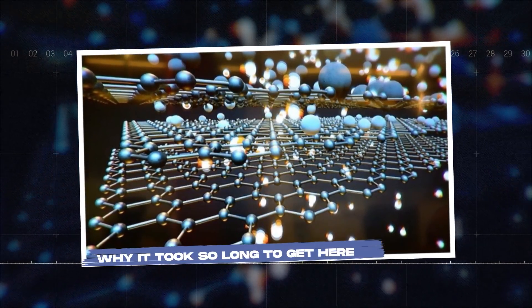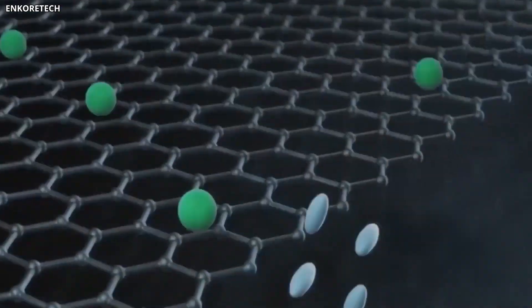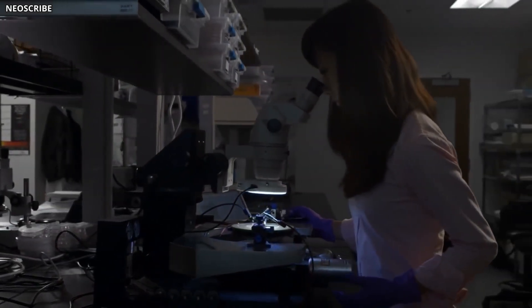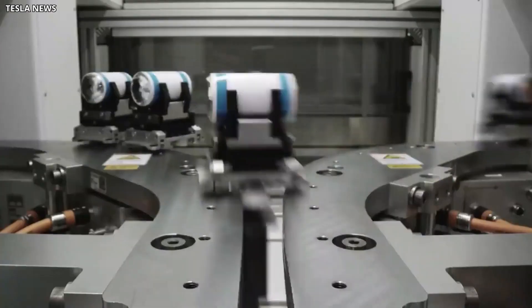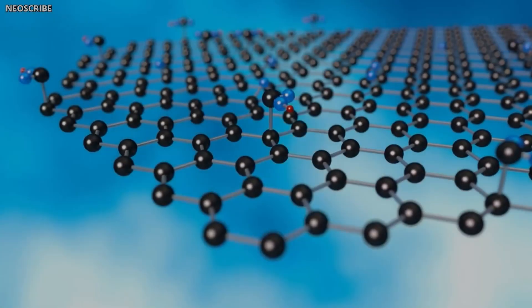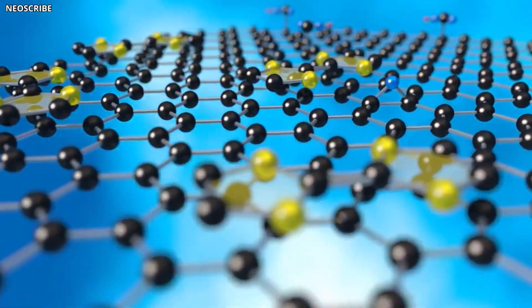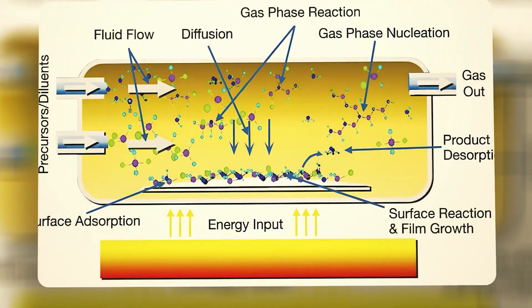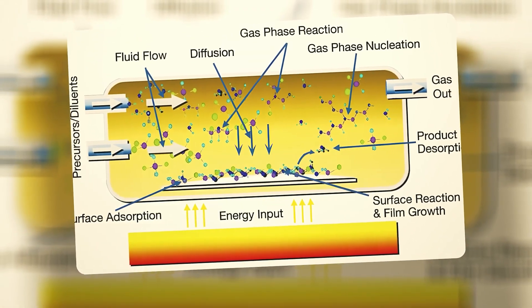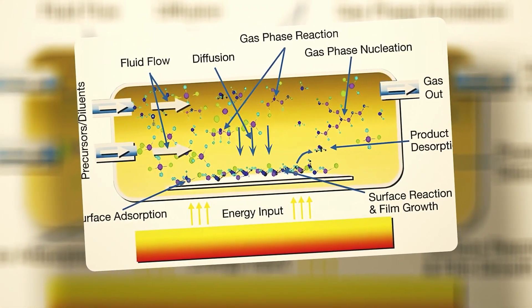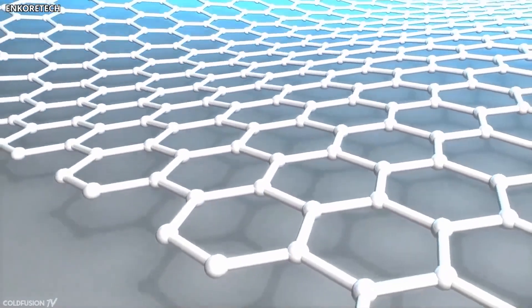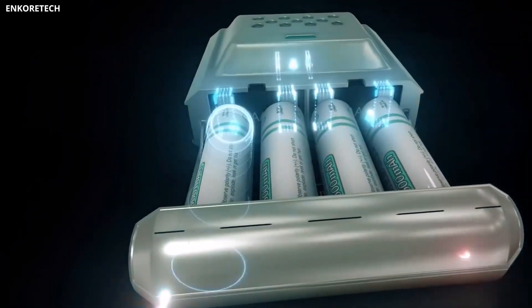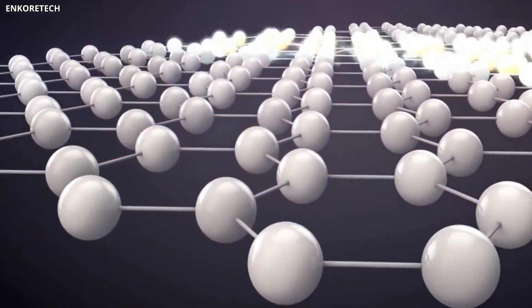Why it took so long to get here. The gap between discovering graphene and putting it in your phone wasn't about whether it worked. Lab tests showed the benefits early on. The problem was making it cheaply, at scale, and in a form that actually fit inside a real product. Producing high-quality graphene in large quantities was incredibly expensive. Early methods involved chemical vapor deposition, where carbon gases are deposited onto a metal surface under high heat. It worked, but it was slow and costly. You couldn't make enough graphene to fill a battery factory, let alone price it competitively against existing materials.